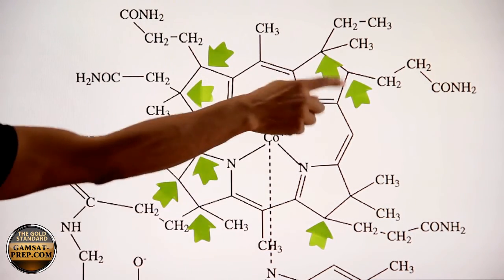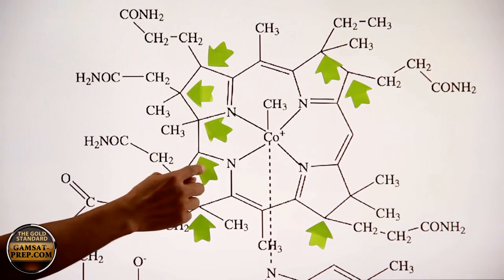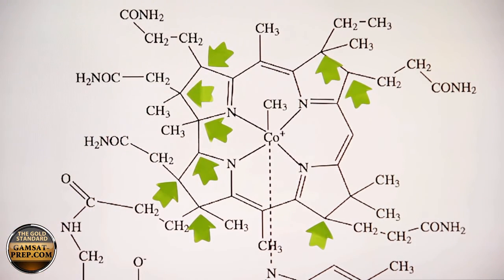So what do we have? We have one, two, three, four, five, six, seven, eight, nine chiral carbons.